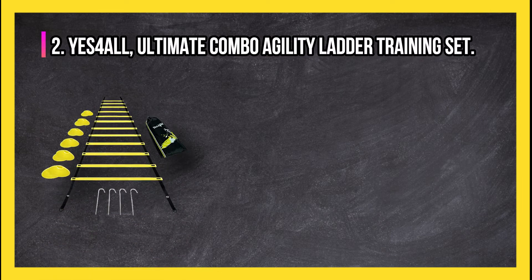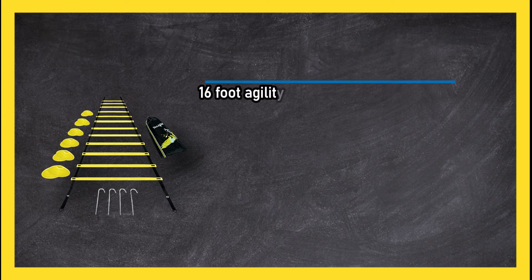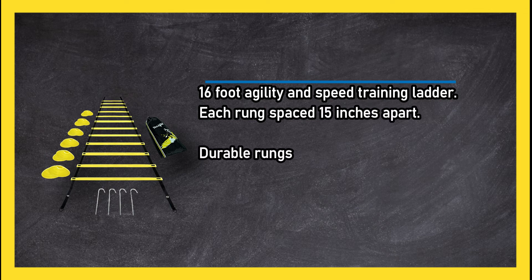At number 2, YES FOR ALL Ultimate Combo Agility Ladder Training Set. 16 foot agility and speed training ladder. Each rung spaced 15 inches apart.